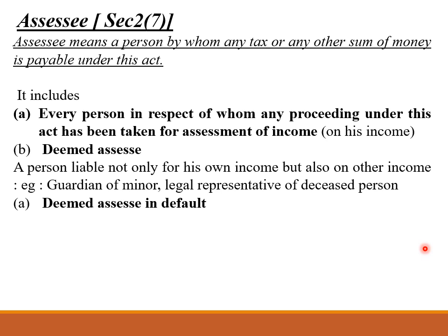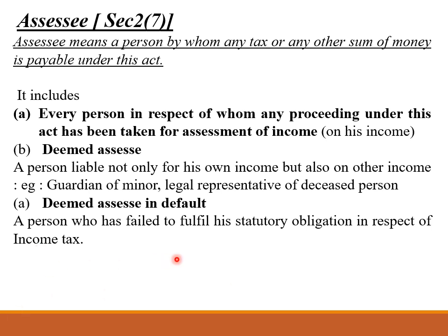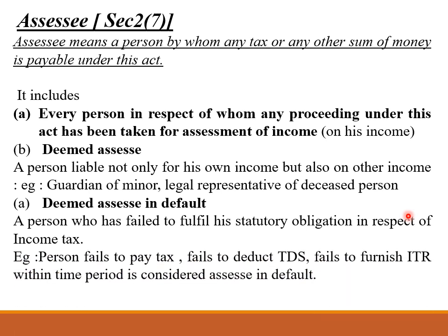Third is Deemed Assessee in Default. A person will be Assessee in Default if they have failed to fulfill their statutory obligation in respect of income tax — for example, a person who fails to pay tax, fails to deduct TDS, or fails to furnish an ITR (income tax return) within the time period. He is then considered as Assessee in Default. These three categories come under the definition of Assessee as per Section 2.7.